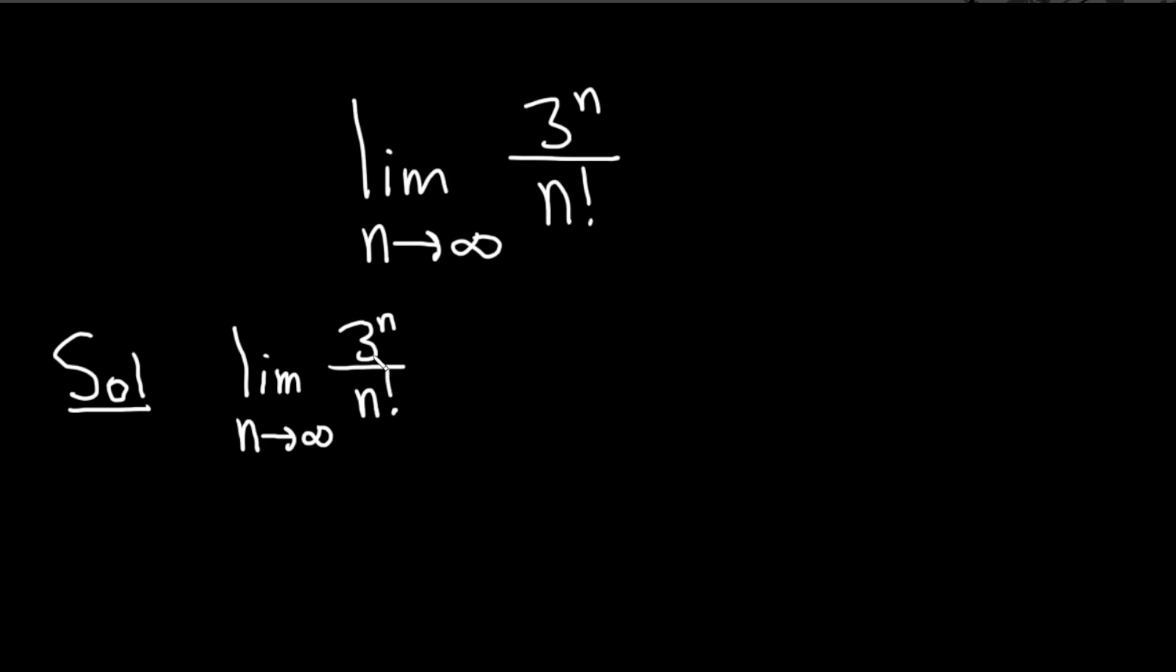The idea here is to know something important about exponentials and factorials. In general, the factorial will grow faster than the exponential for n big enough. So n factorial is bigger than 3 to the n